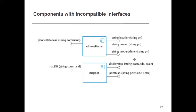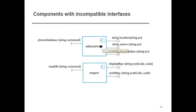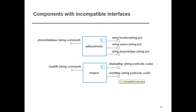For example, I have string postcode parameters — two parameters that are the same but with different names, and functions with different names. When integrating these components, it will show an incompatible interface for the address finder. Similarly, for the mapper integration, it will also show an incompatible interface.